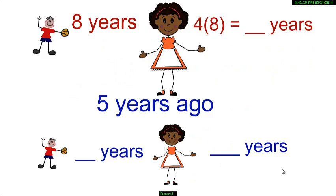So, Reno's brother's age is 8 years and Reno's age is 4 into 8 that is 32 years.